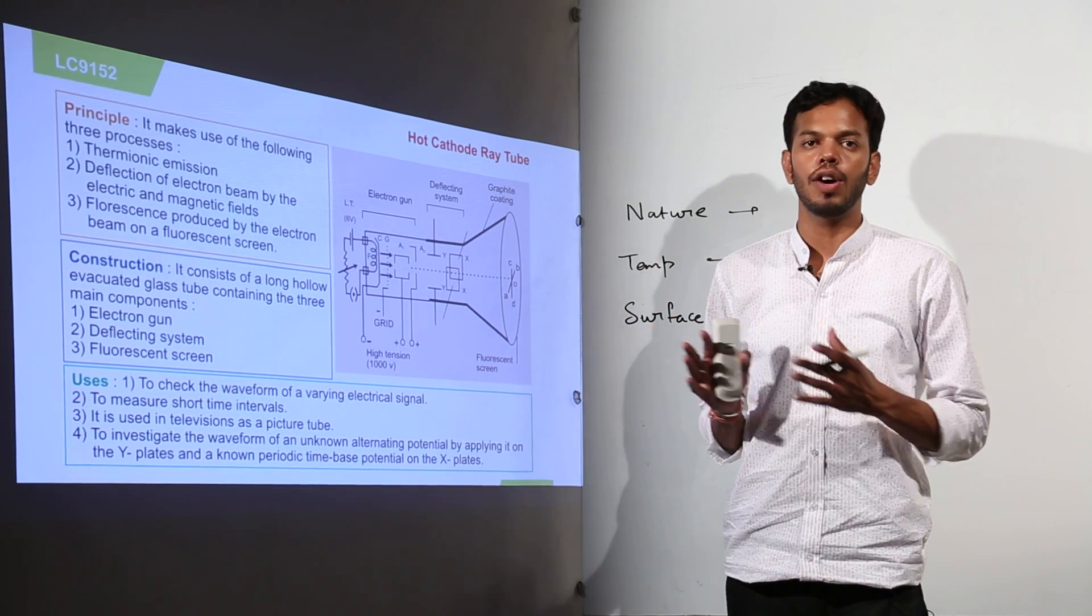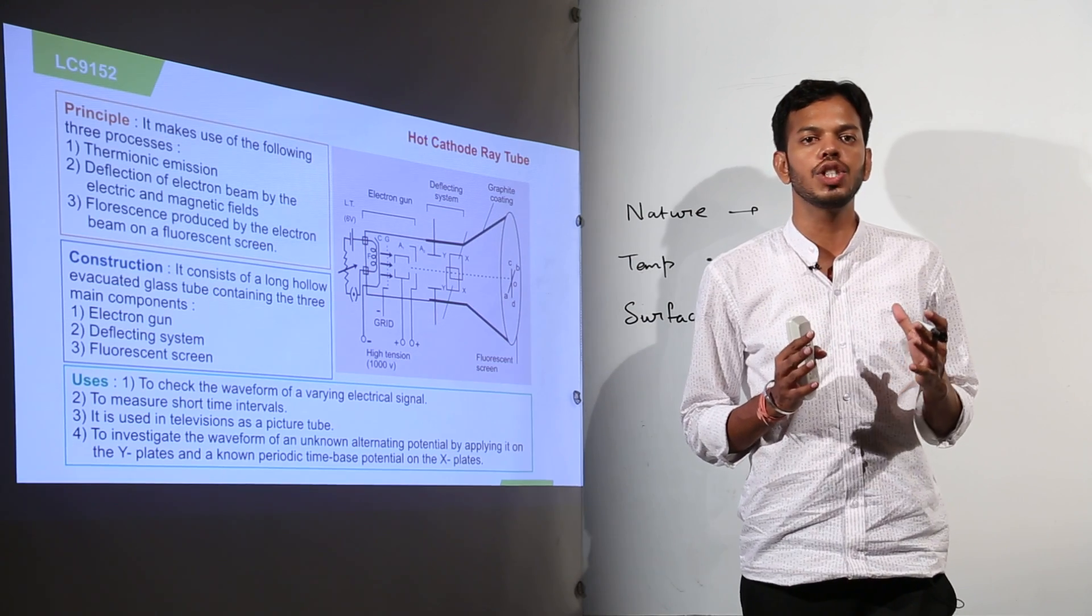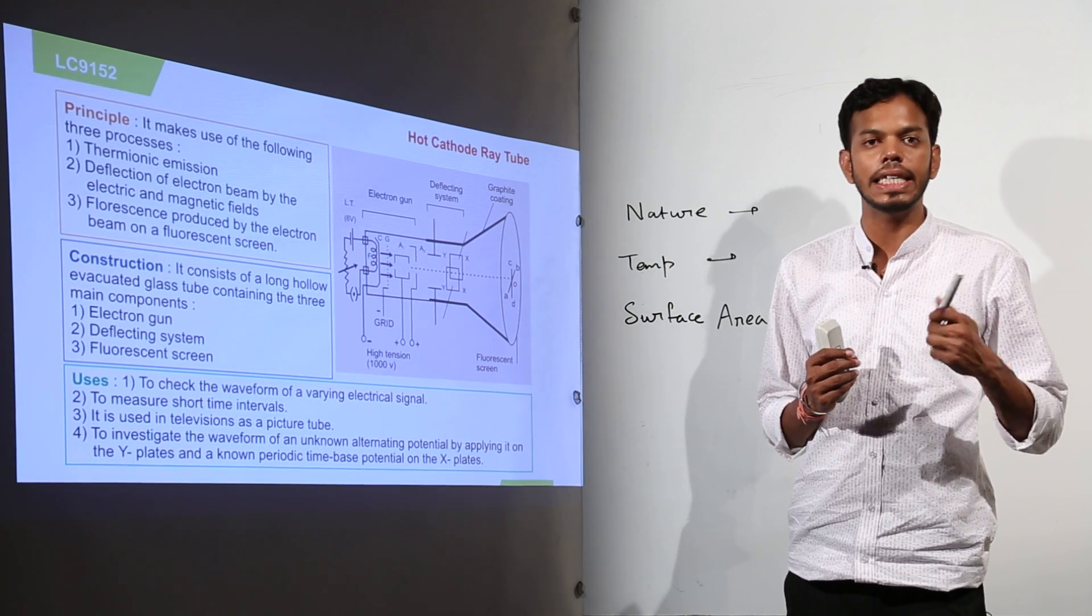Before moving on to the detailed study of hot cathode ray tube, what do you think should be the factors which should affect the emission of electrons from a metal when it is heated up?